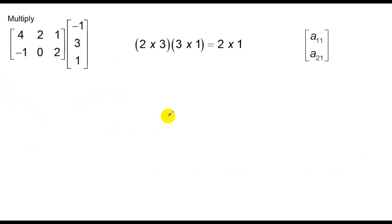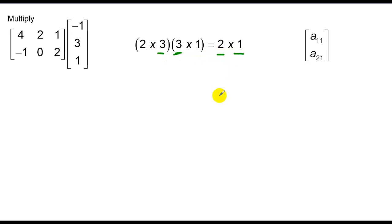Here we go. I have a 2 rows by 3 column matrix and a 3 row by 1 column matrix. Because the number of columns in the first equals the number of rows in the second, I can multiply. My solution dimension is a 2 by 1 — two rows, one column. So I have elements A sub 1,1 and A sub 2,1, meaning first row first column and second row first column.